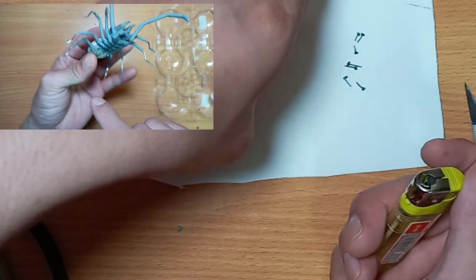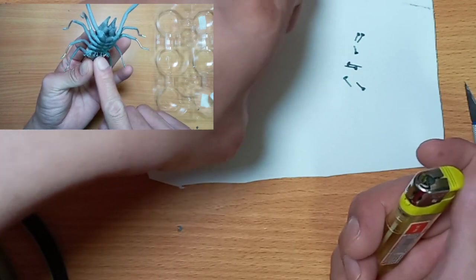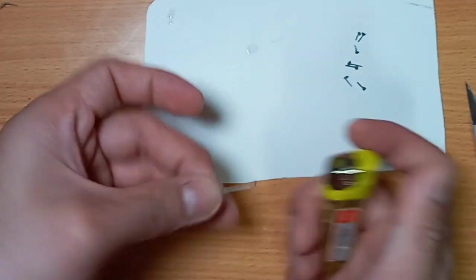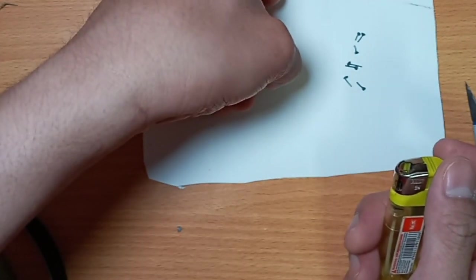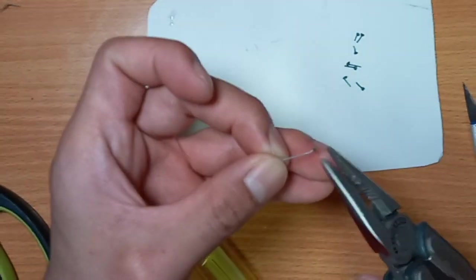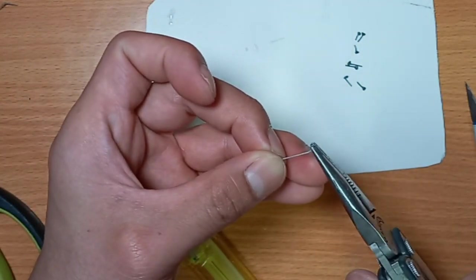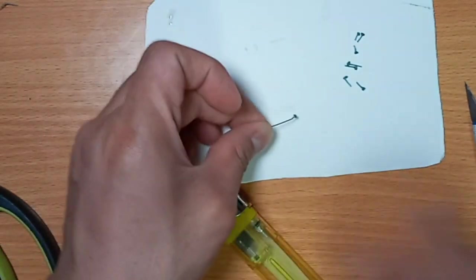I melt the tip of the bristles lightly using a lighter, and while it is still soft, I pinch it with pliers, then cut to proper sizes. I already attached them as you can see in the inserted video on your left, using epoxy.